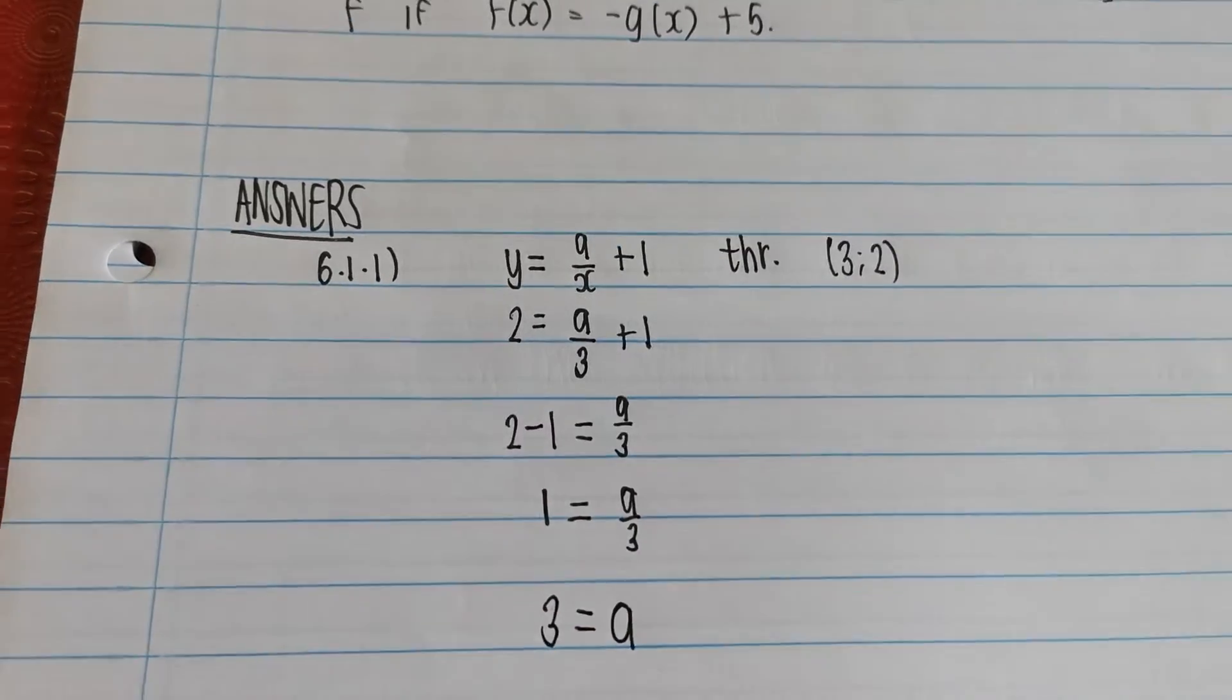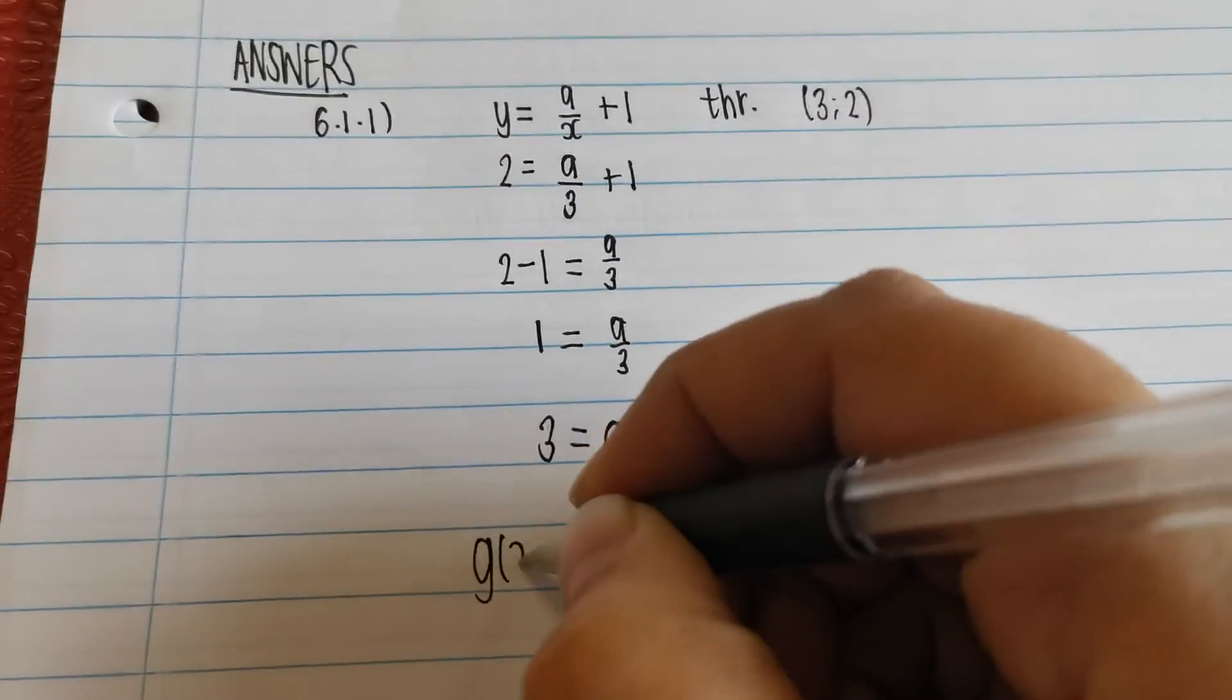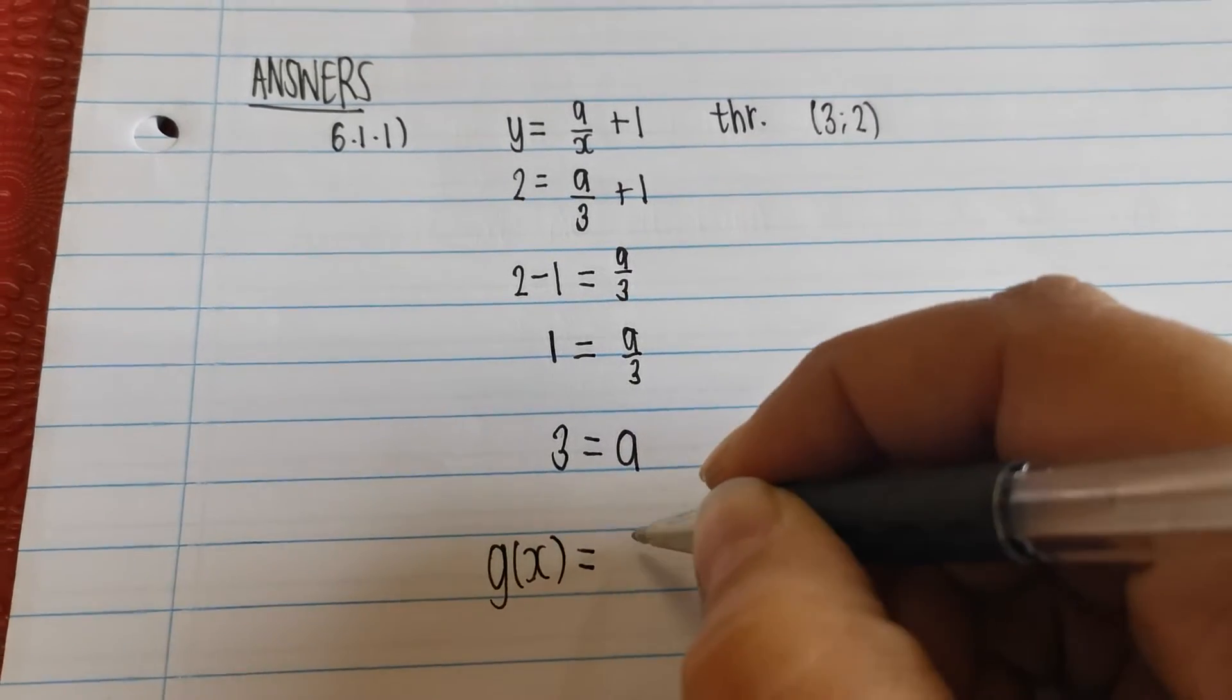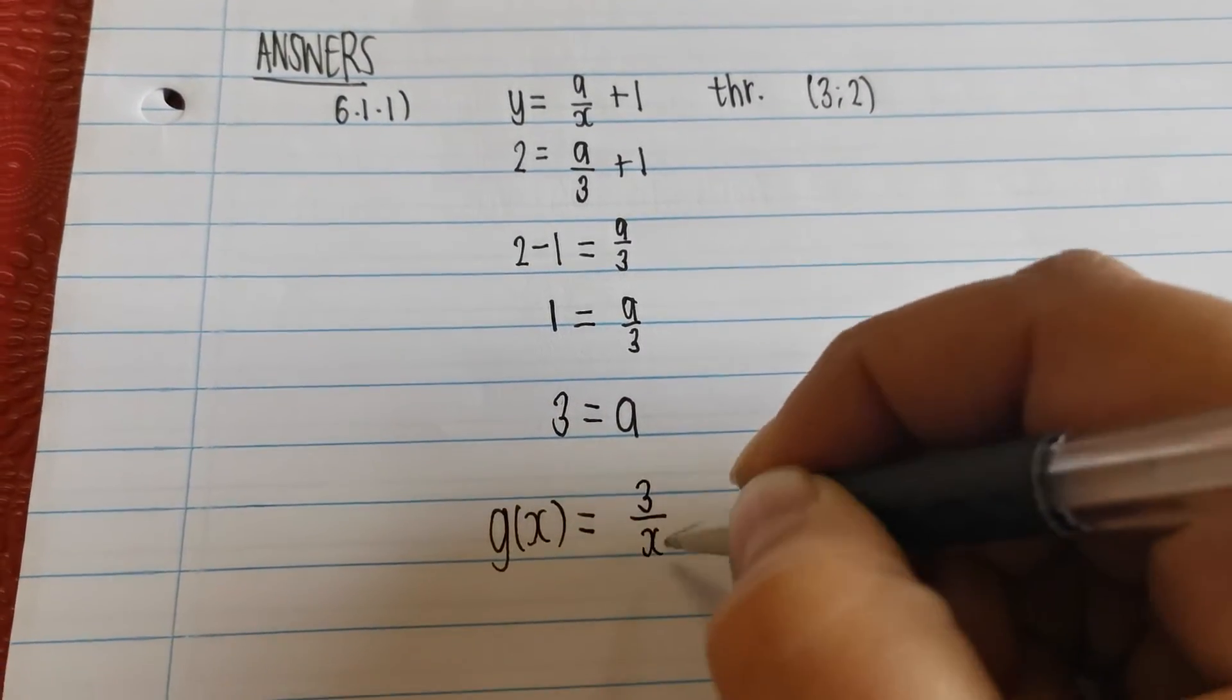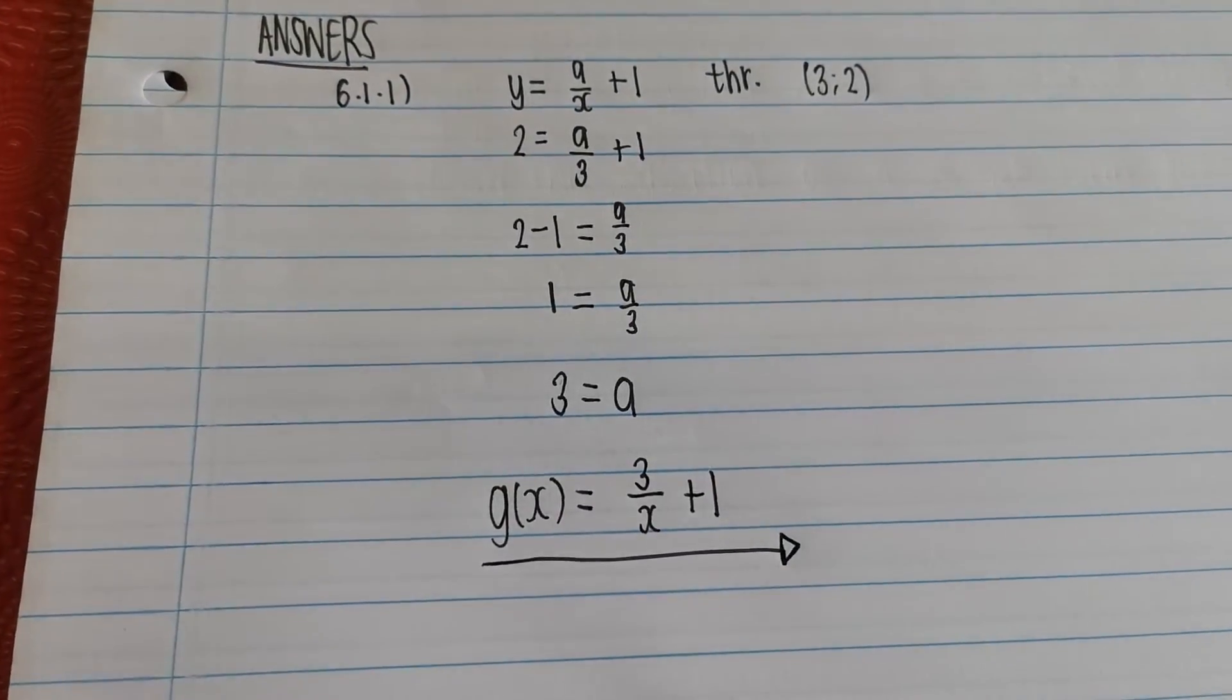giving me a is equal to 3. Now I can write down my equation of g(x). g(x) is equal to 3 over x plus 1. That's my answer. Not so bad.